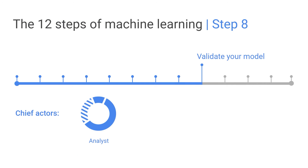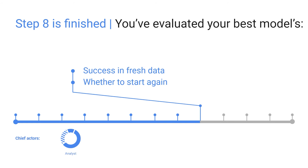Next, avoid bias remorse with validation. Step 8 is finished when you have your best candidate model, you've evaluated success in fresh data, and decided whether you want to go back and start again in the training process.